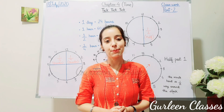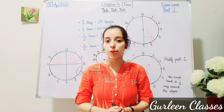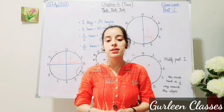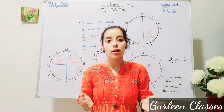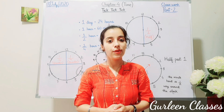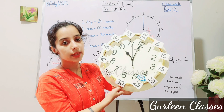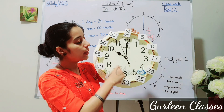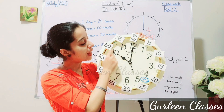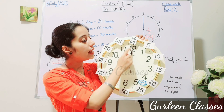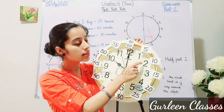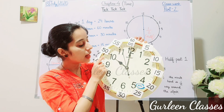Hello students, welcome back. In a previous lecture we completed chapter number four, Tick Tick Tick, part one. Today we are going to start with part two. Let us do a quick recap. Here is an analog clock. The face of a clock is divided into 12 equal parts. The longer hand is called the minute hand and the shorter hand is called the hour hand. There are five small divisions between two numbers, and they are known as minutes.